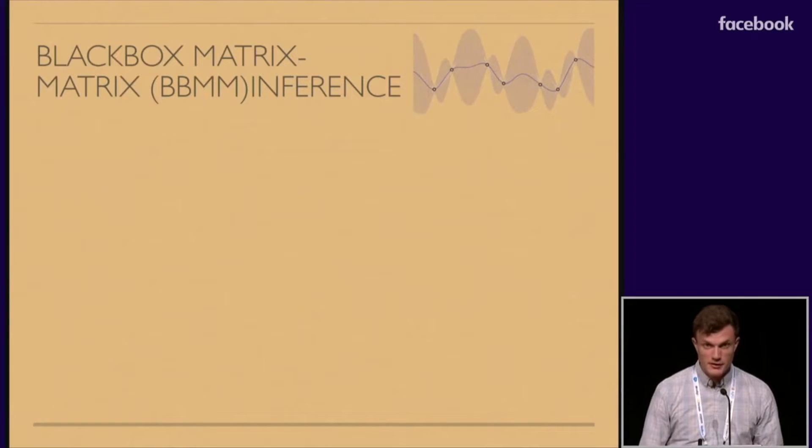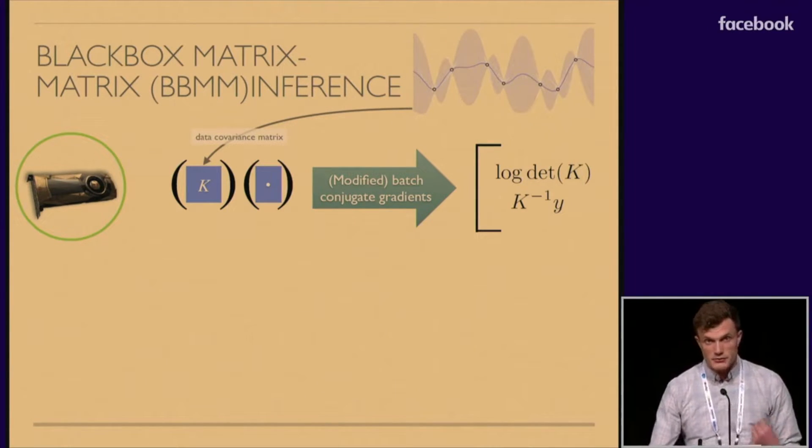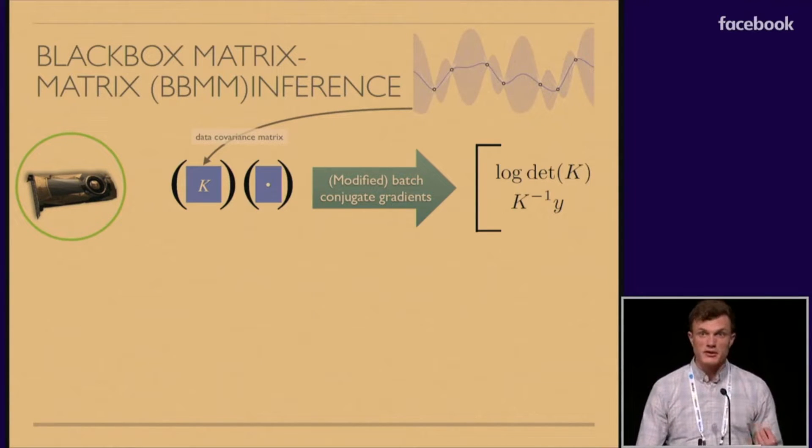To accomplish this, my collaborators and I developed a new approach to Gaussian process inference which we call black box matrix matrix inference. This builds upon a lot of prior work that shows that a lot of the terms you need for Gaussian process inference can be derived through routines that use matrix vector multiplication with the kernel matrices. What we do in this paper is we introduce a modified version of the conjugate gradients algorithm that works in batch and computes all the terms you need for Gaussian process inference in parallel through some matrix-matrix multiplication routines with the kernel matrix.